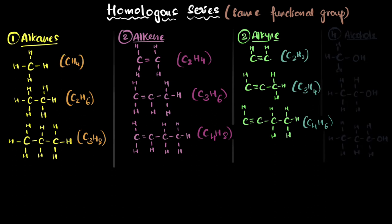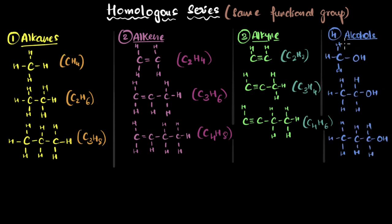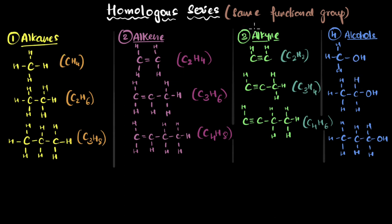And you can have additional homologous series. For example, all alcohols have one OH group. So all the members of this series are also homologous because they have the same functional group — in this case, the OH, the alcohol group. And you can have more complicated homologous series with multiple functional groups, but the point is that all the members will have the same functional group or groups.